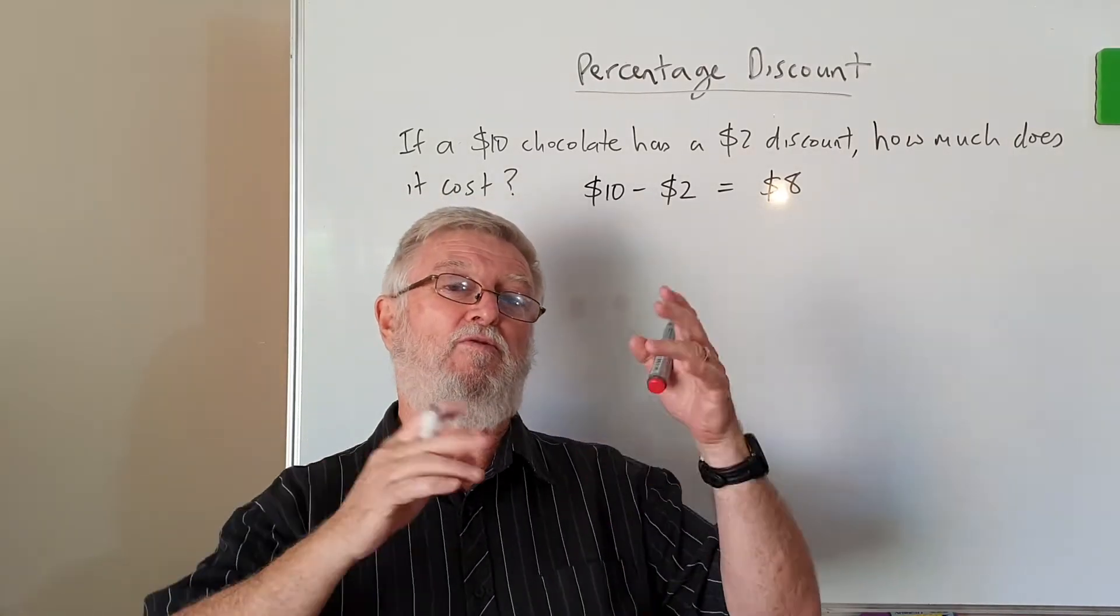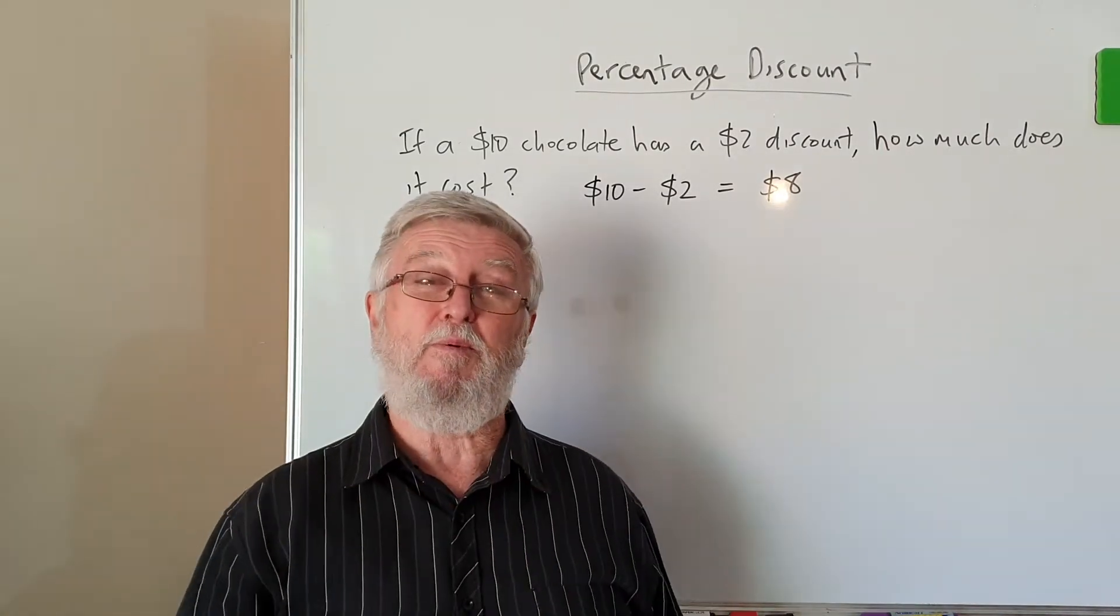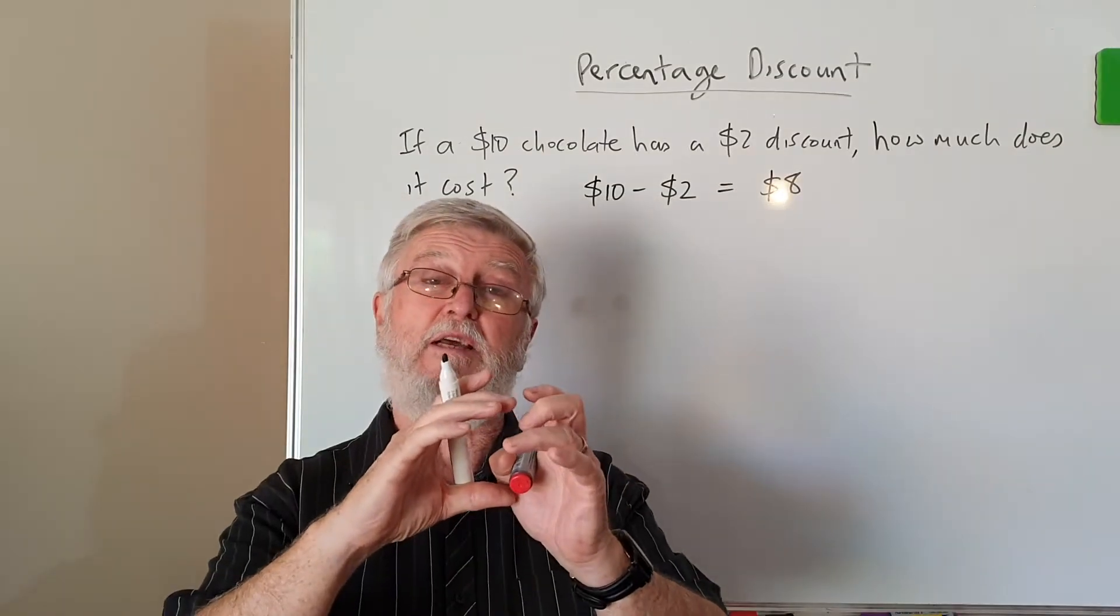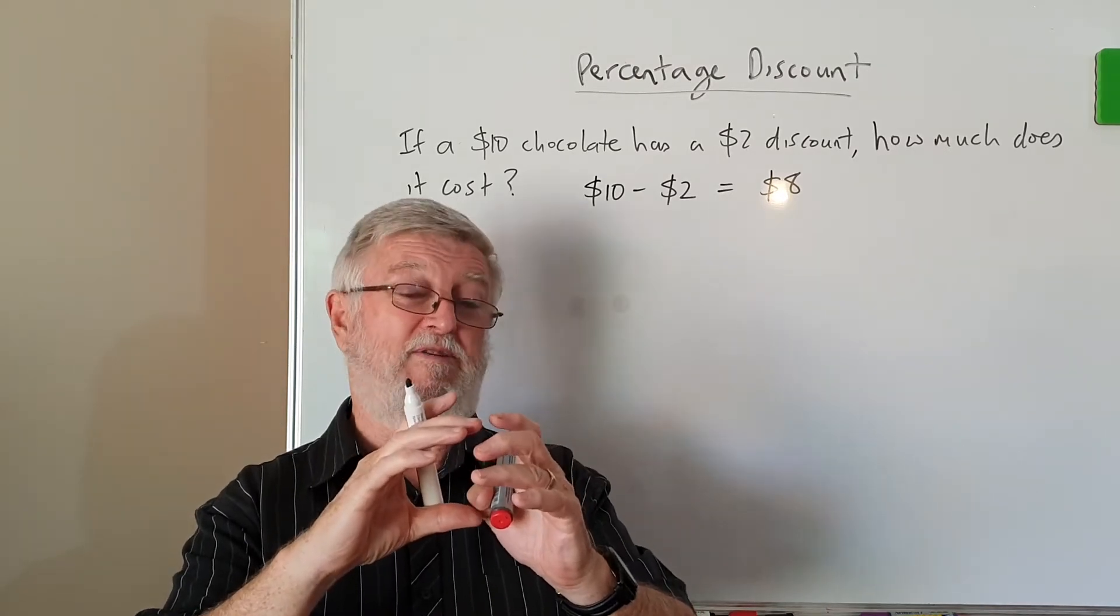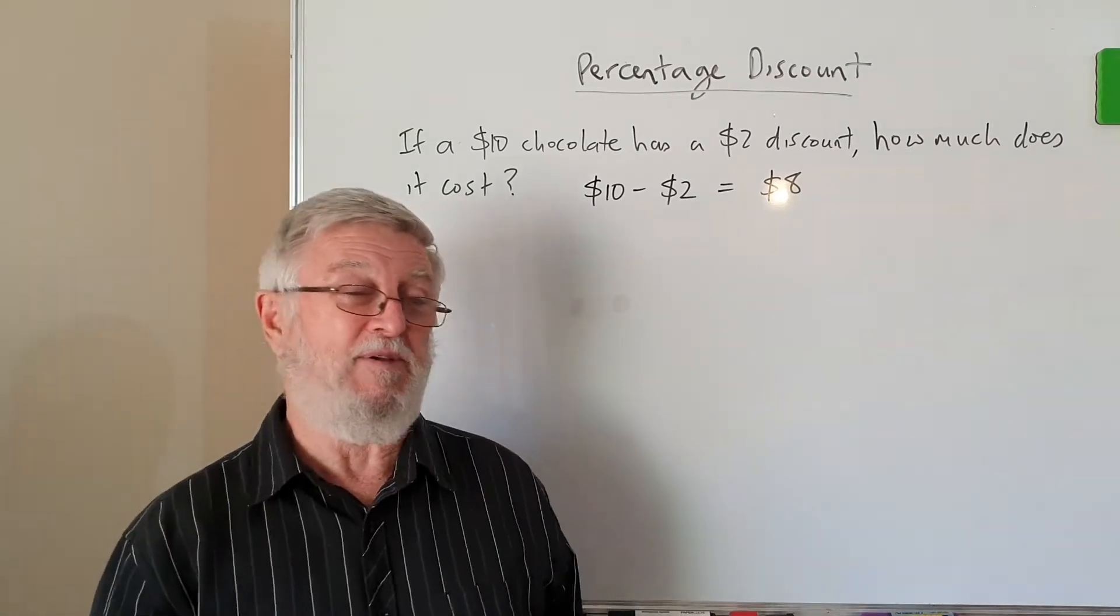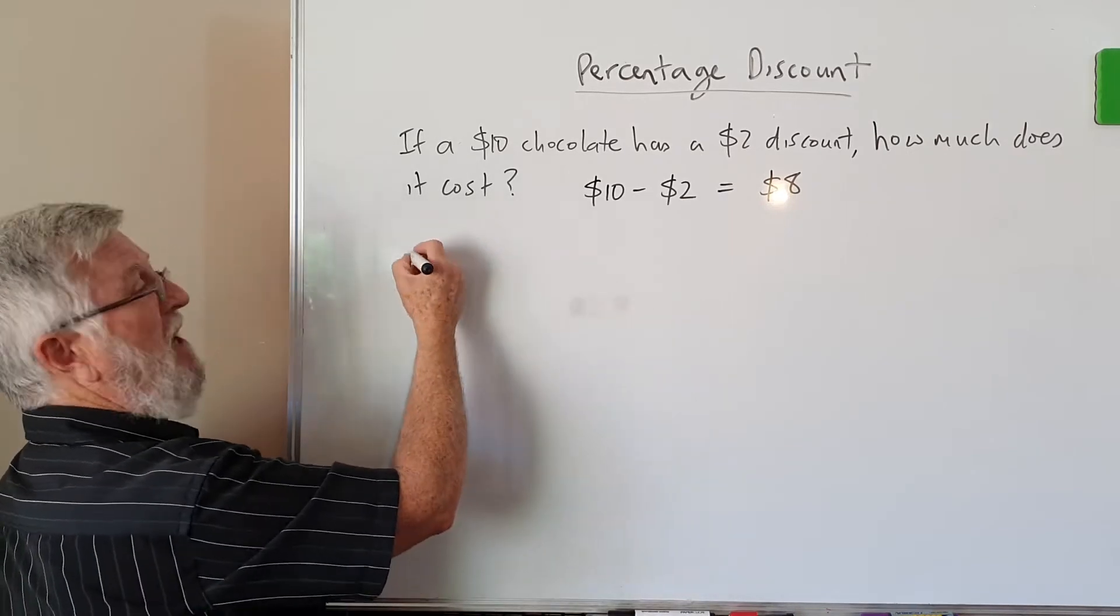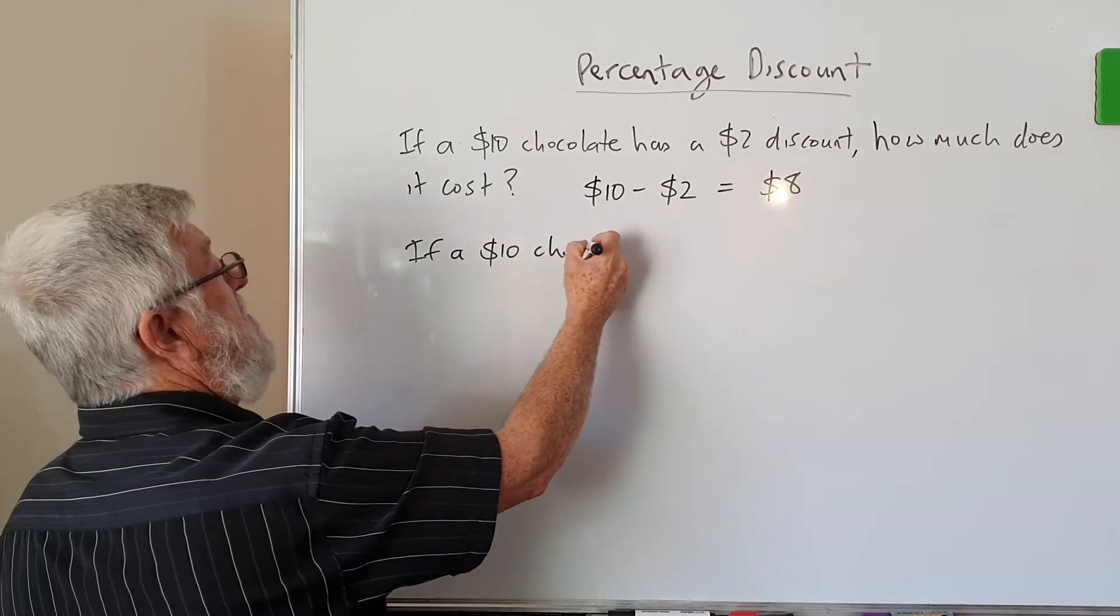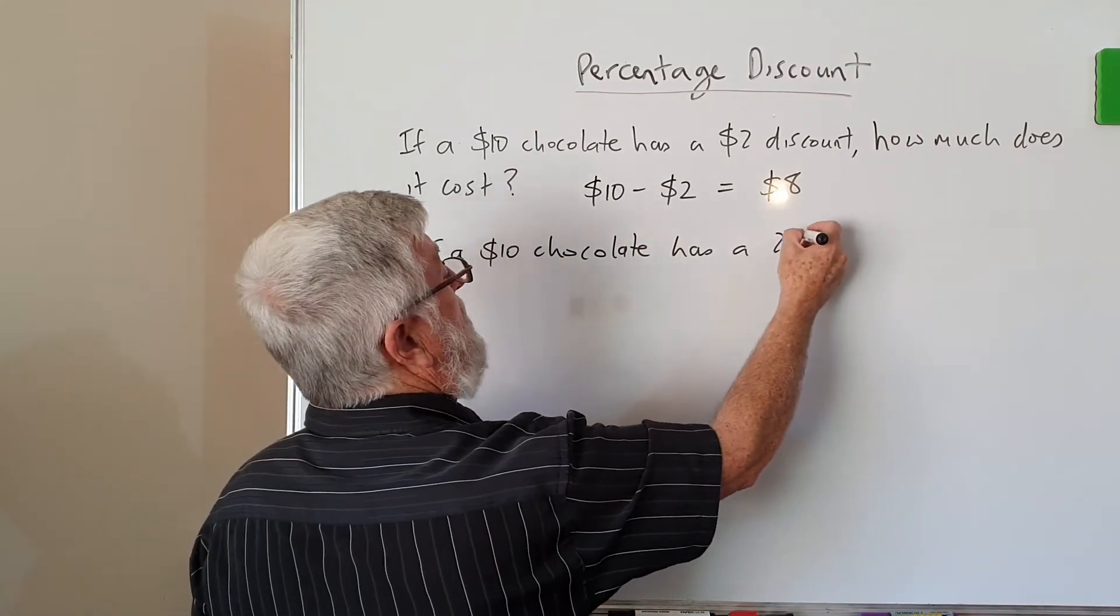But everywhere we go, people don't talk in terms of the $2. They talk in terms of the percent. When I look at my local supermarket, they'll have yellow stickers with the percentage discount. Quite interesting how often the numbers are quite wrong actually. Most of the time they're accurate or close enough, but sometimes they're quite wrong. So if I'm talking about a $10 chocolate has a $2 discount, more commonly we will say a $10 chocolate has a 20% discount.